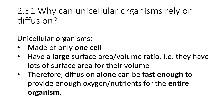Now we've done our recap, we can get into the body of this. Why can unicellular organisms rely on diffusion alone? Why don't they need a transport system? They're made of only one cell and are very very small, which means they have a very large surface area to volume ratio. As we just said, the larger the surface area to volume ratio the faster diffusion can happen. Because it happens so quickly, they can diffuse all the oxygen and nutrients they need straight through their membrane, rather than needing a transport system to move things around their body like larger organisms would.